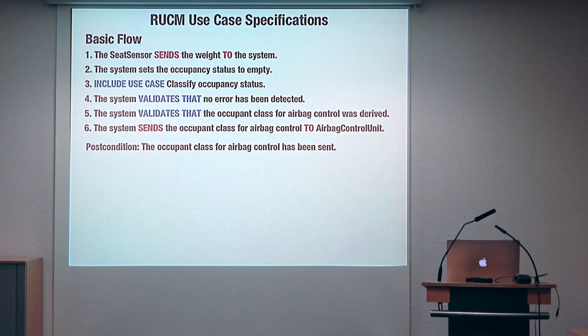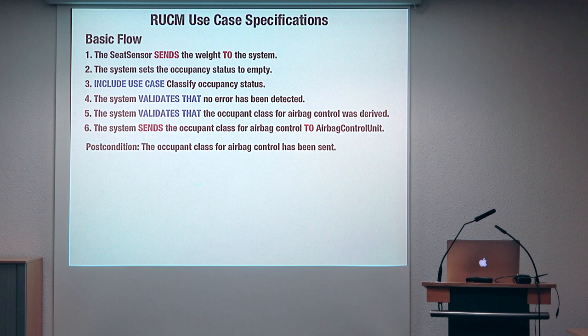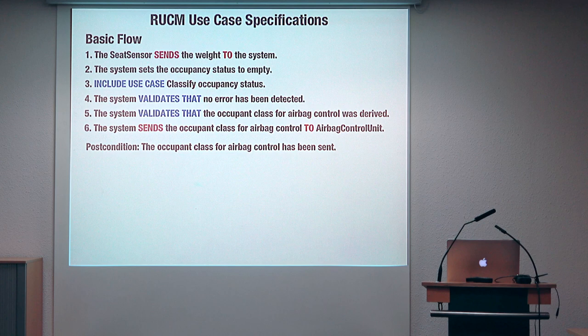In this use case specification you can see that there are a few keywords in capital letters. These keywords — 'sends to', 'this use case', and 'validates that' — are important for us because they let us automatically identify the type of input in these use case specifications. As you can see, these keywords do not limit too much the expressiveness of the use case, because all the other words that are not keywords are free.